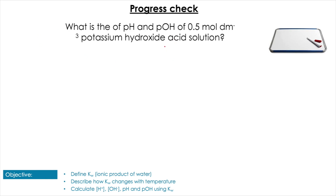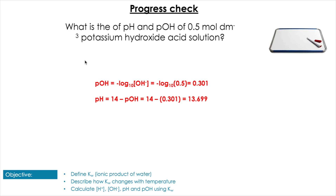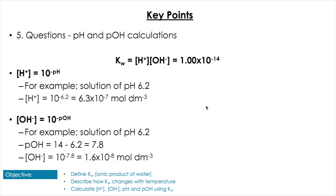Find pH and pOH of 0.5 mol dm⁻³ potassium hydroxide — pause the video. pOH = −log(0.5) = 0.301, and pH = 14 − 0.301 = 13.699. Either the Kw method or the pH + pOH = 14 shortcut is acceptable here.